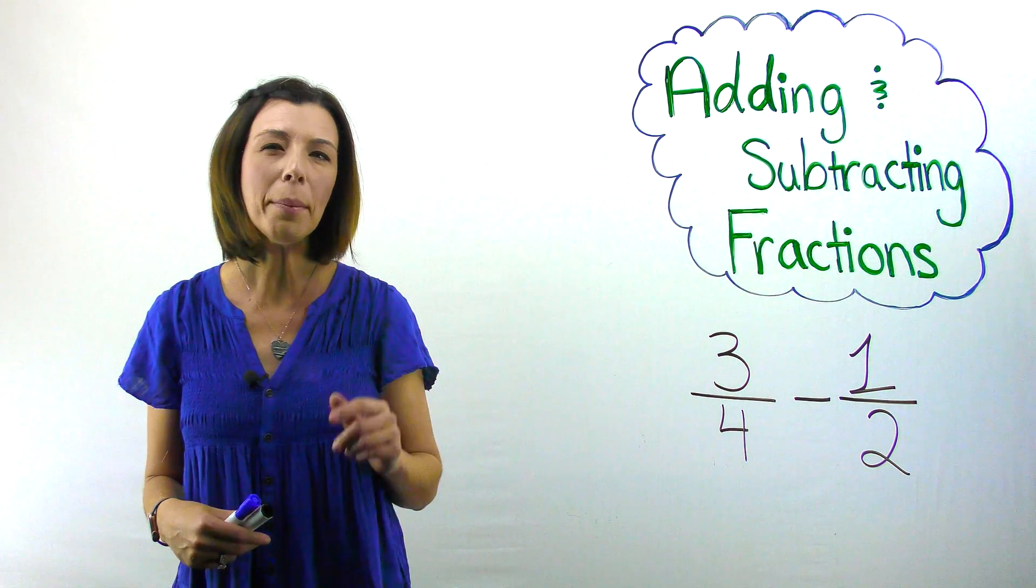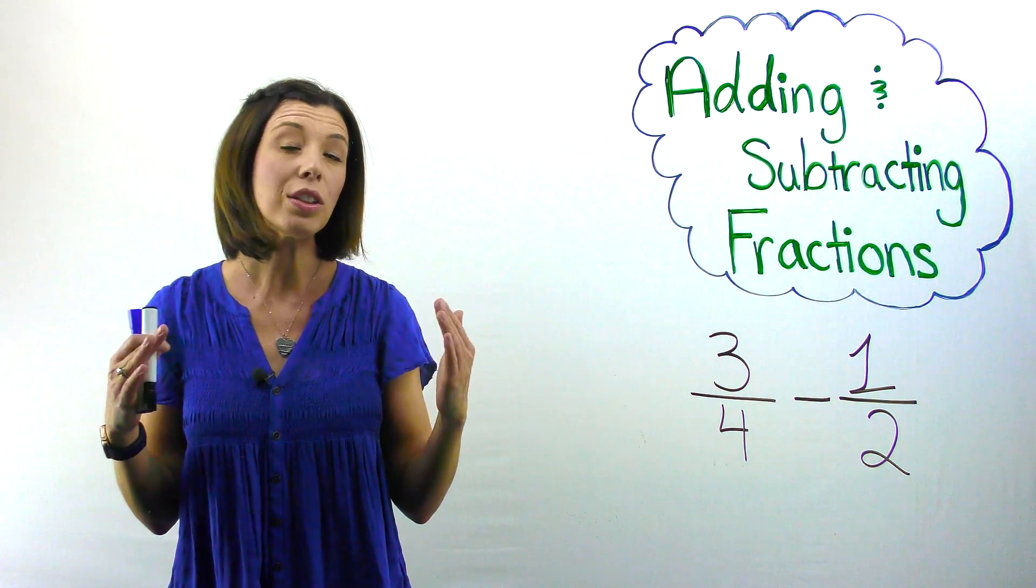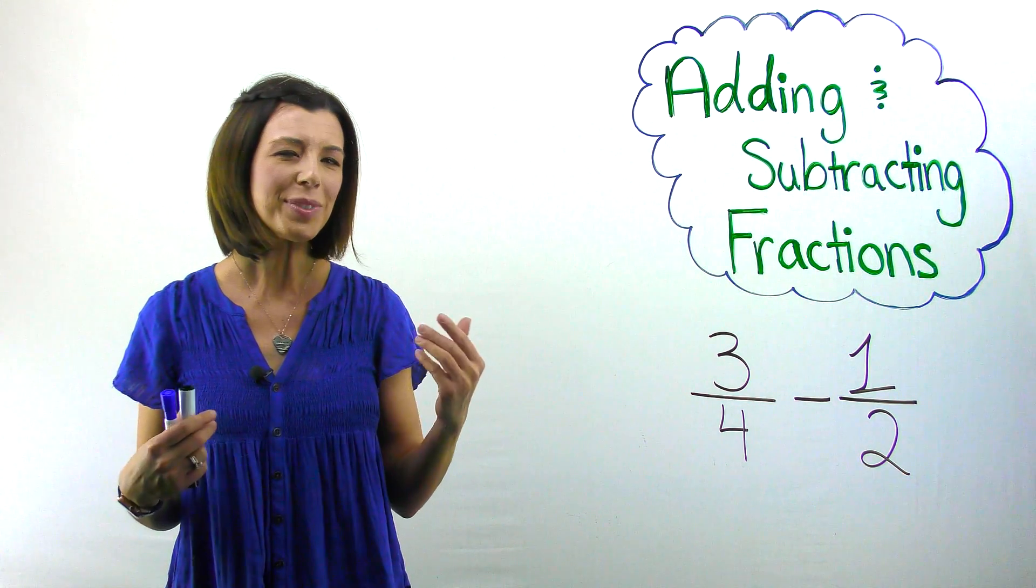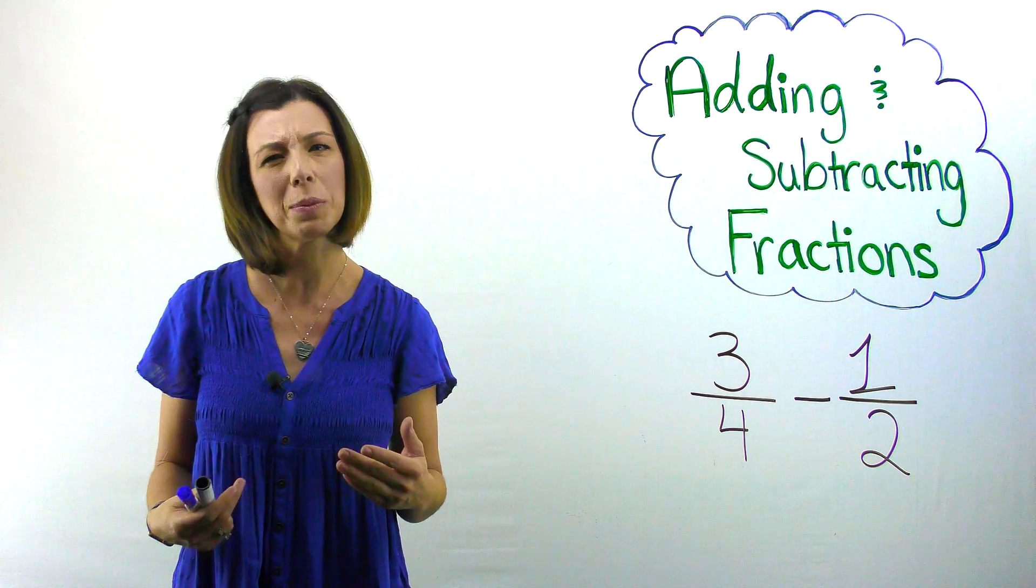However, the problem with that scenario is that if you're talking about having three-fourths of the pizza and you give half of it away, you're actually needing to do multiplication.